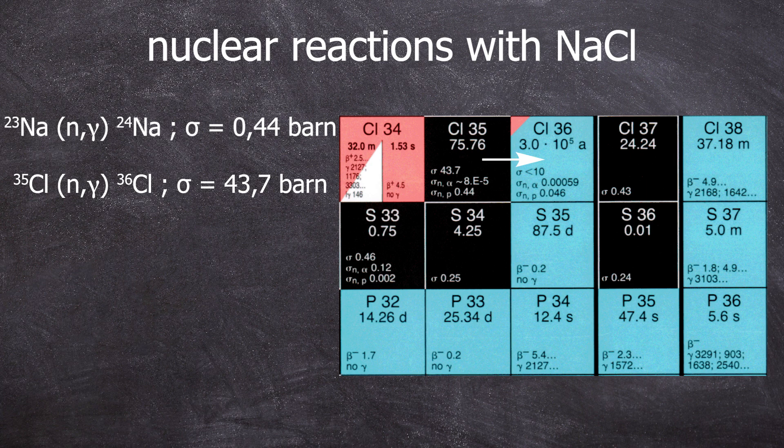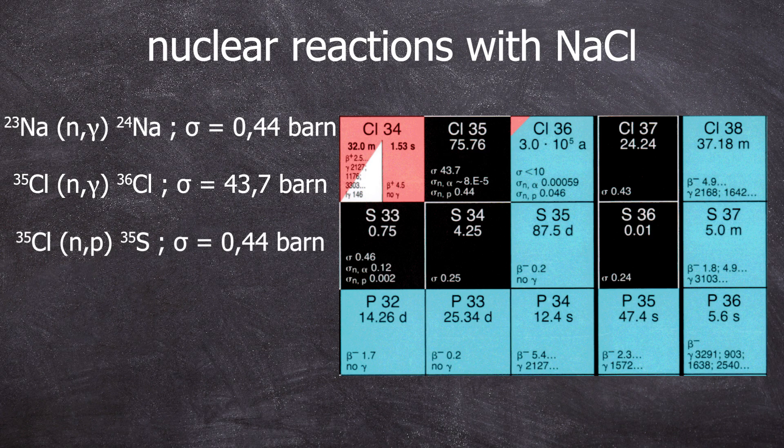However, this chlorine might also undergo a different nuclear reaction called an n-p reaction where one neutron goes in and one proton comes out. This reaction produces sulfur-35 from chlorine-35, and this has a cross section of 0.44 barns.